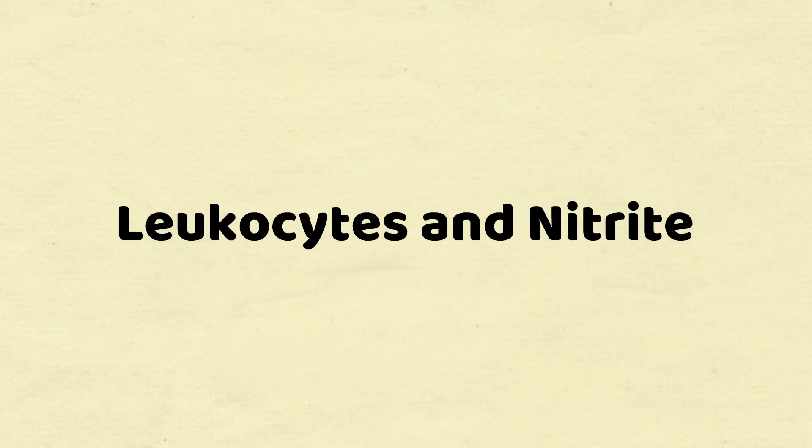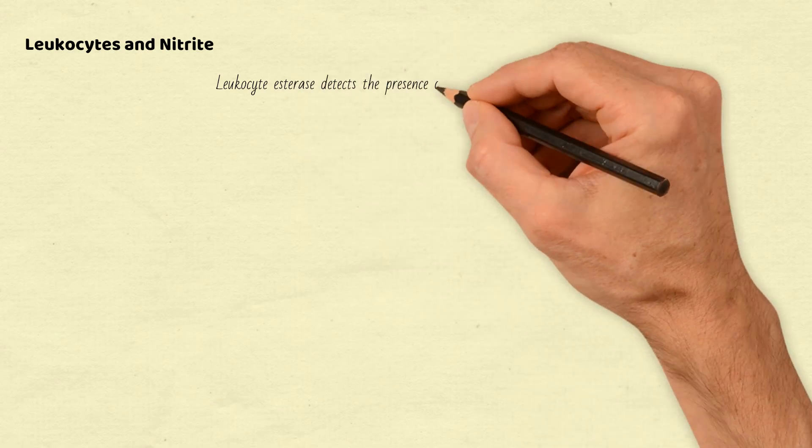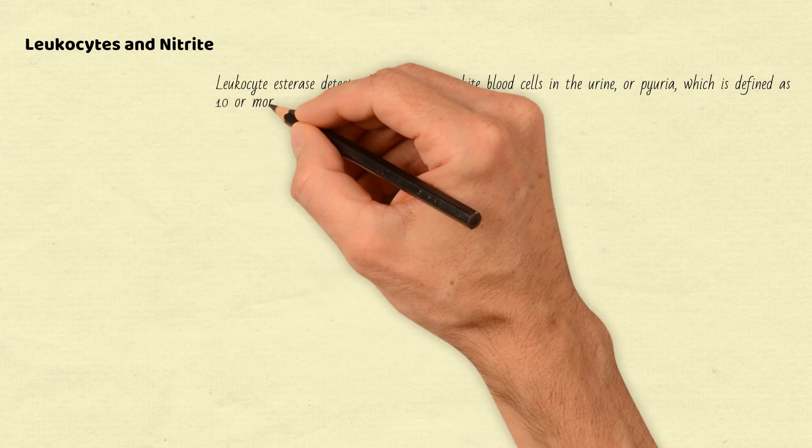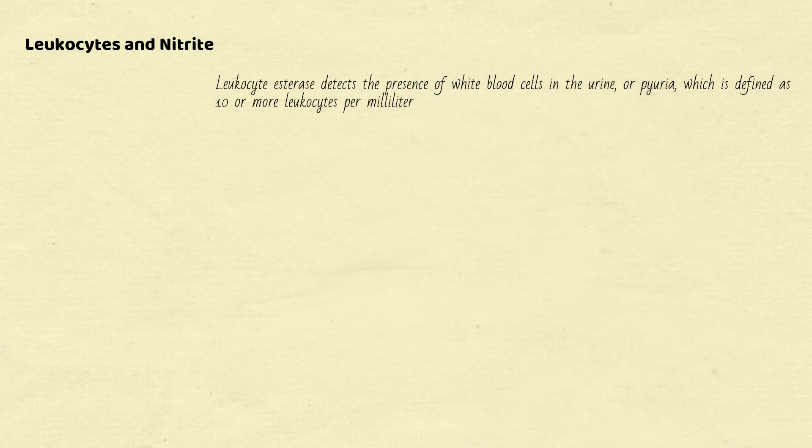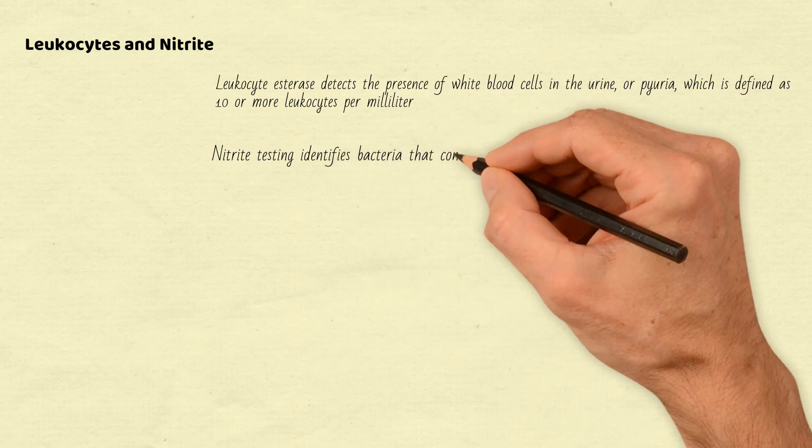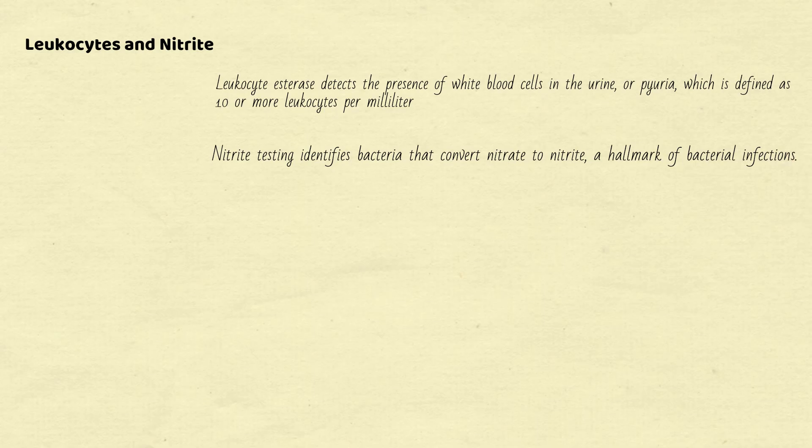Now let's talk about leukocytes and nitrite in urine, two important indicators of urinary tract infections (UTIs). Leukocyte esterase detects the presence of white blood cells in the urine, or pyuria, which is defined as 10 or more leukocytes per milliliter. Nitrite testing identifies bacteria that convert nitrate to nitrite, a hallmark of bacterial infections. Let's break down the testing methods.